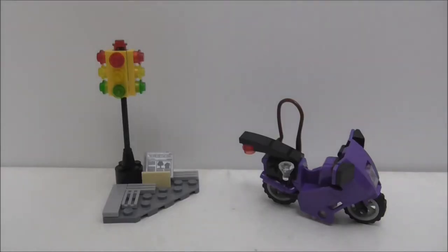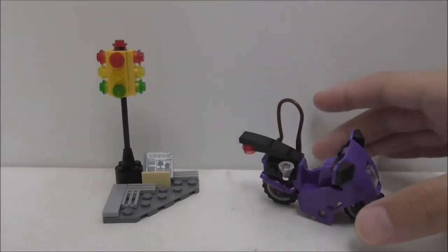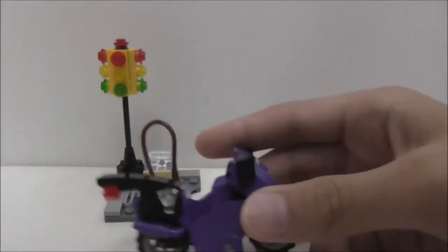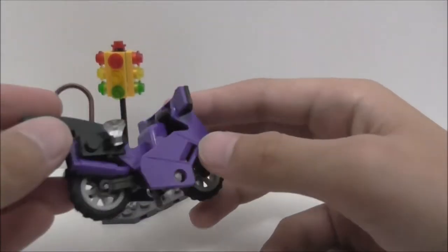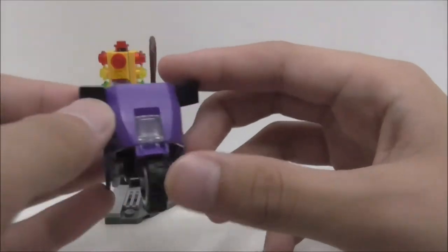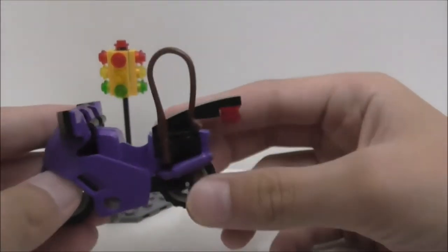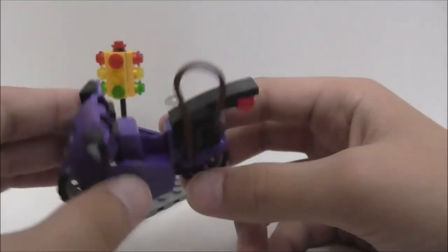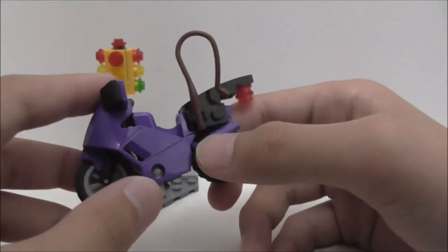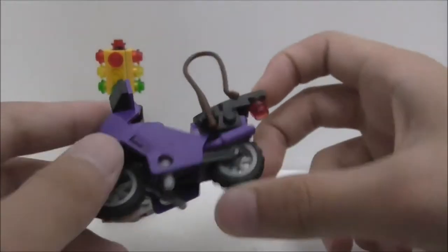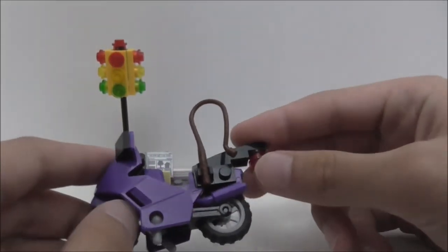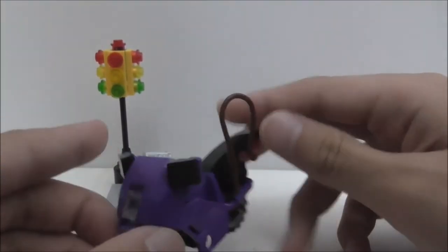This is just the build of the set. Not much since this is a small set. Let's start off with Catwoman's Cat Cycle. You can see it's just a purple motorcycle mode, and I believe it's almost the same as the one from the Cycle Chase set which came out quite some years ago.